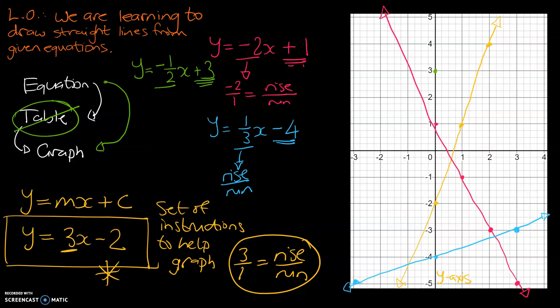The negative 1 half. That tells us about the rise over run. So, we are rising negative 1. Which means we're falling 1. And, then we are running 2. So, we are falling 1. And, running 2. We are falling 1. And, running 2. And, we've got our three points there.